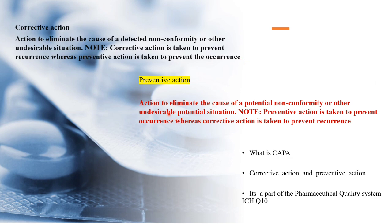Preventive action is an action taken to eliminate the cause of a potential non-conformity. We are taking preventive measures to avoid an undesirable potential situation. This is what CAPA — corrective action and preventive action — means, and as already mentioned, it is a part of the pharmaceutical quality system.